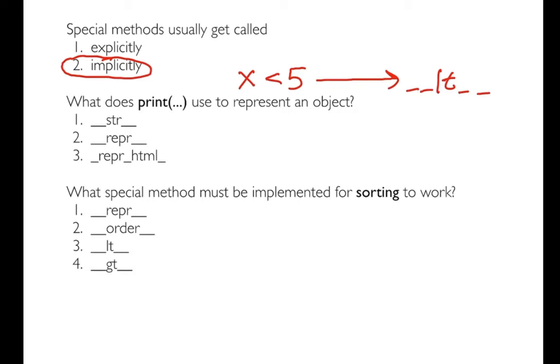Okay, second: what does print use to represent an object? And the answer is it uses __str__. So when we're printing things that's usually meant for a user of the program not necessarily an actual programmer, and so the str is what's traditionally used for that.